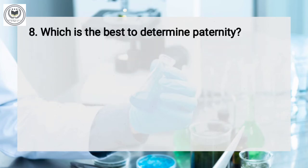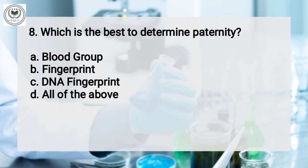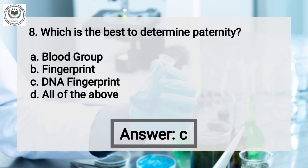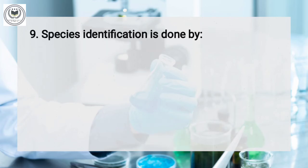Question number 8: which method is best to determine paternity? Option A: Blood group, option B: Fingerprint, option C: DNA fingerprint, option D: All of the above. And the answer is DNA fingerprint.